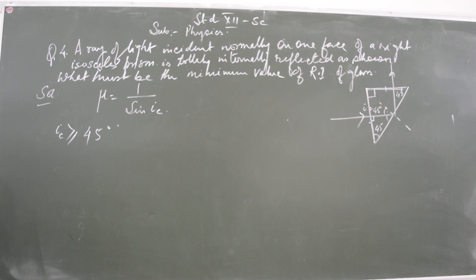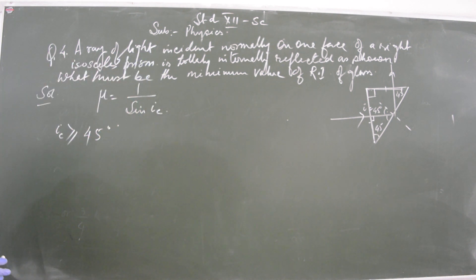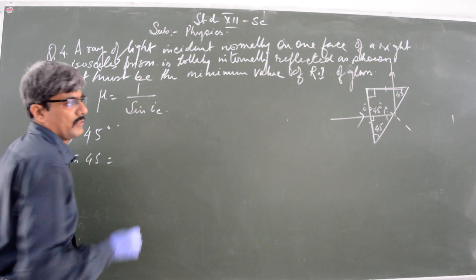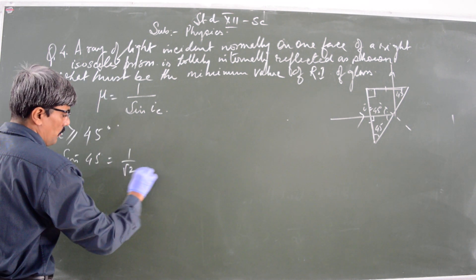So what does this mean? This simply means that if the critical angle is less than 45 degrees, the light ray will not get totally internally reflected; rather it will refract. Now sine of 45 degrees is 1 by root 2.